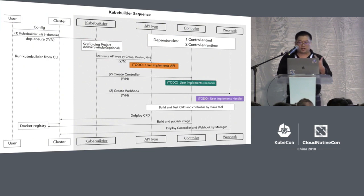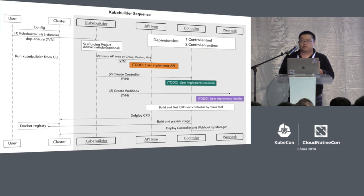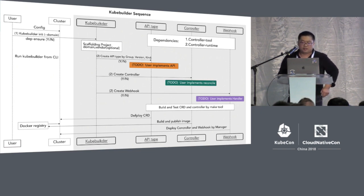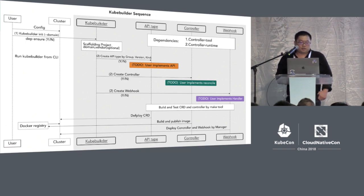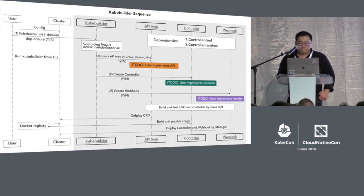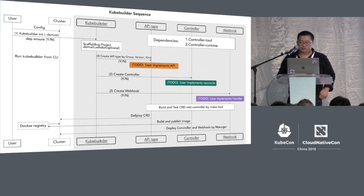As a command-line tool, CodeBuilder provides an easy-to-use user experience. This diagram shows a quick start for running CodeBuilder from a command line. You can start by running CodeBuilder init to initialize your project, taking the domain as input as you wish. In the interactive mode, the user can decide to render the dependencies and create the API, controller, and webhook individually.